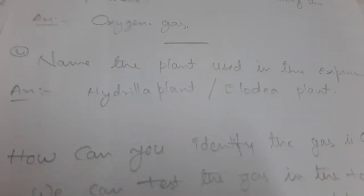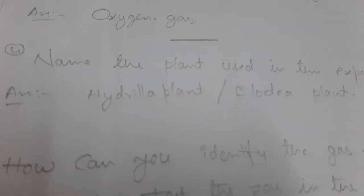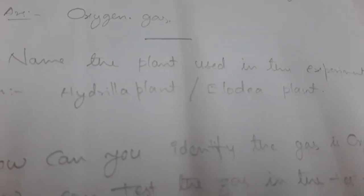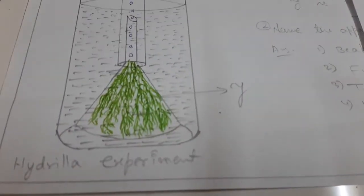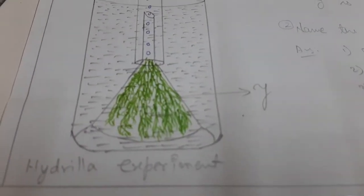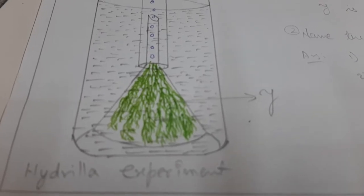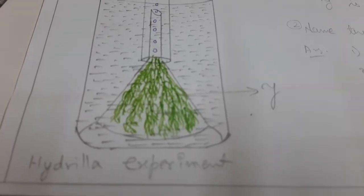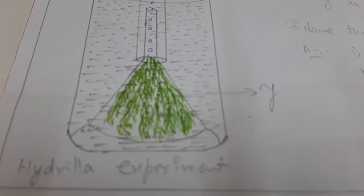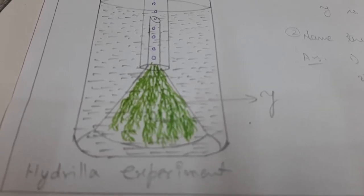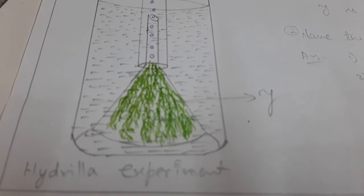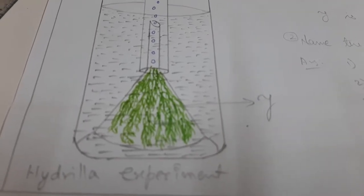Next question, the fourth question: name the plant used in this experiment. We have used a plant. What is the plant? It is Hydrilla plant. If Hydrilla plant is not available, we can also use Elodia plant. Both are aquatic plants.